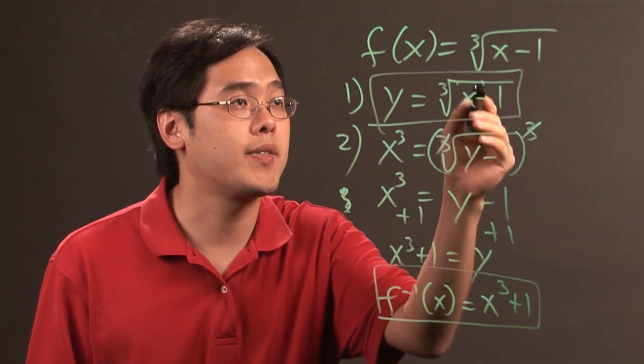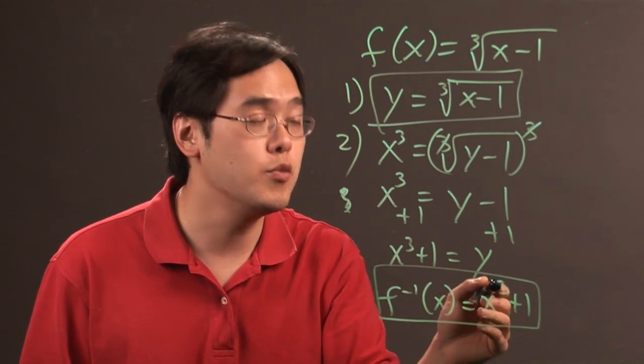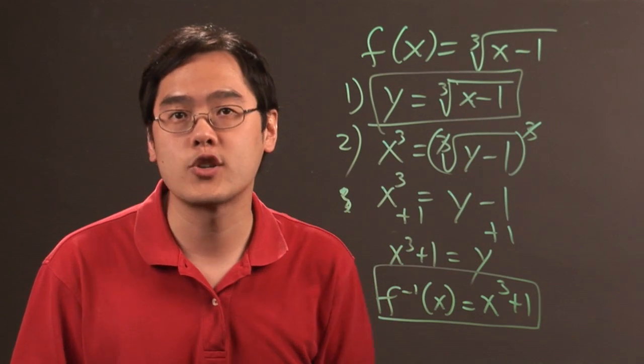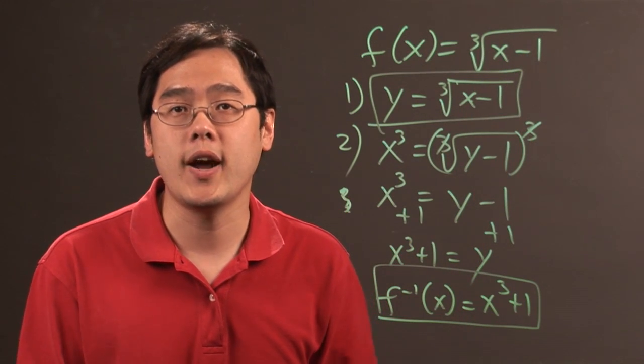Not too surprising given that if the original function has a cube root, the inverse function has a cube. And if the original function has subtraction of 1, the inverse has addition of 1. As long as you follow the steps to finding an inverse of a function,